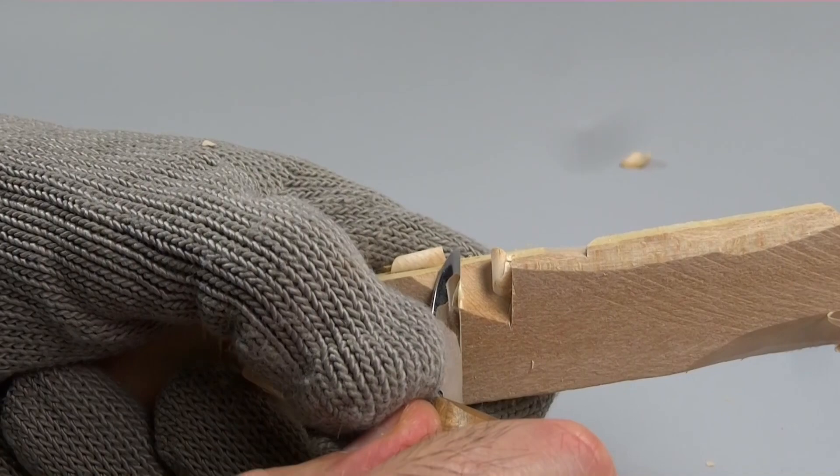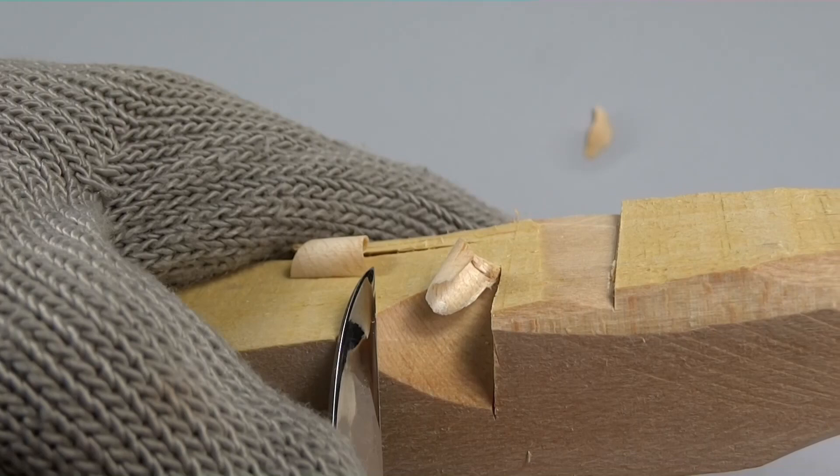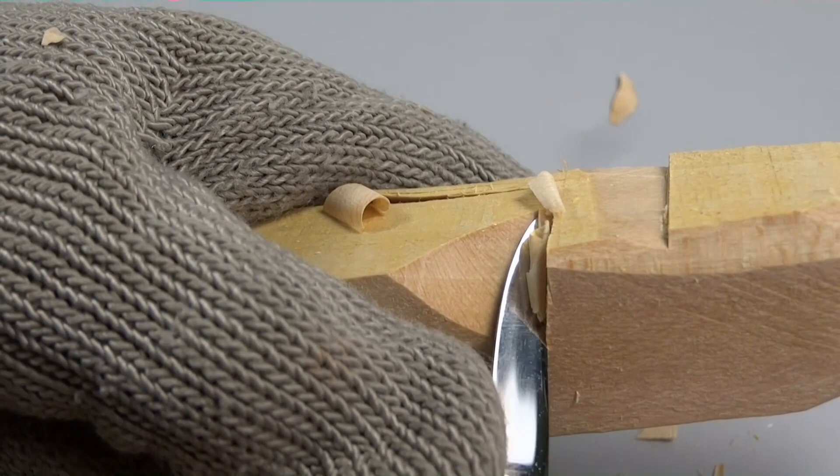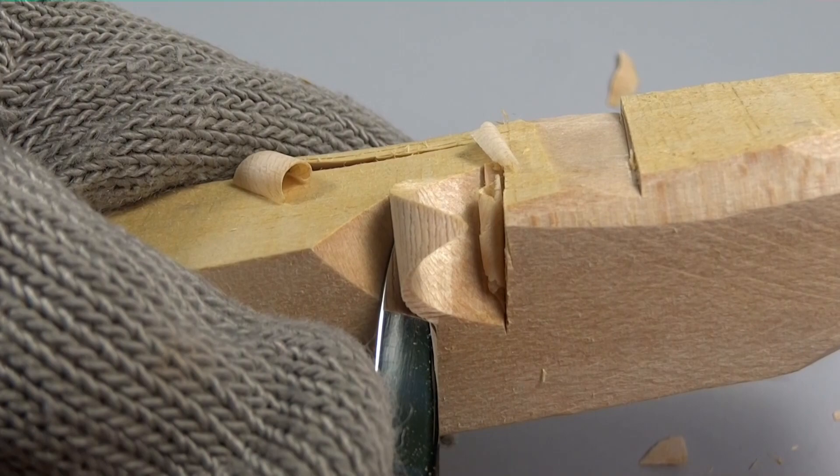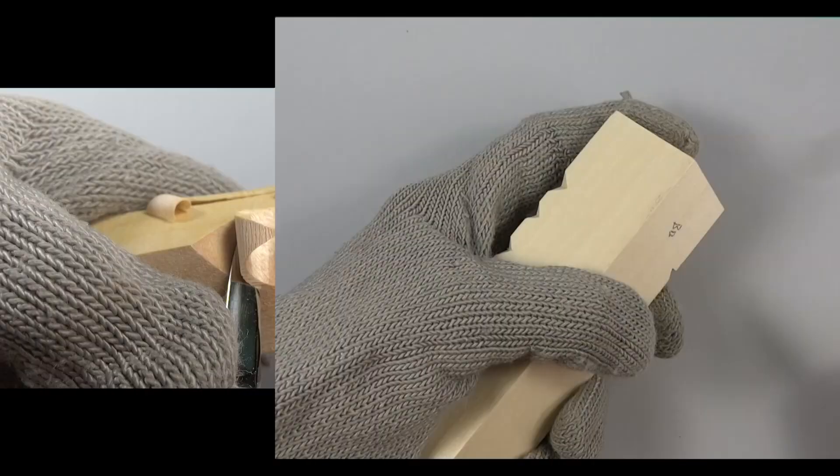I also want to point out that I'm nibbling at this wood. I'm not taking aggressive cuts. So I'm making a stop cut and then gently carving into that stop cut. The last thing you want to do is do something like this. See how aggressive? You're just going to hurt yourself or damage the carving.